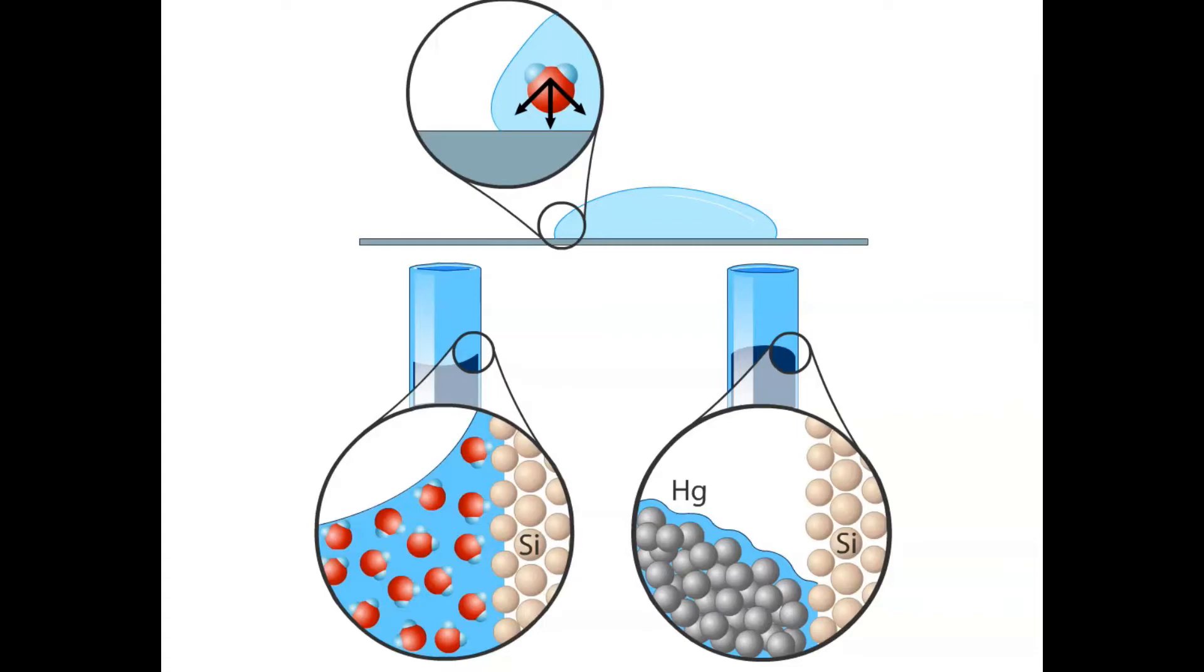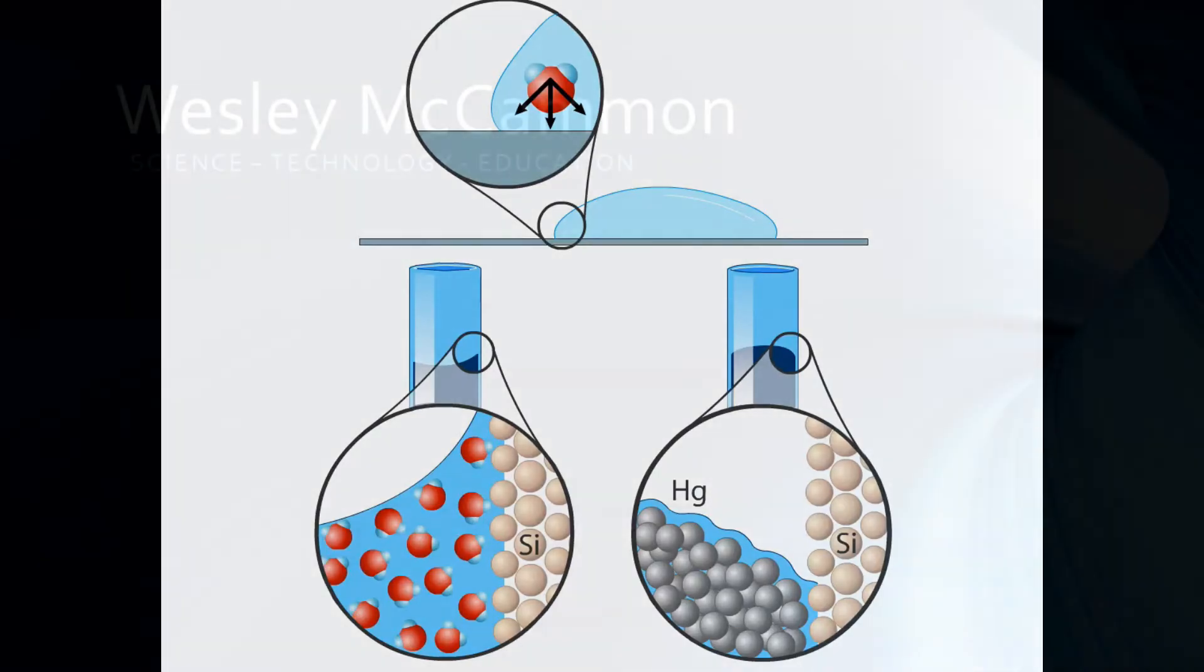When cohesion is stronger than adhesion, there is a negative meniscus, such as mercury in a graduated cylinder.